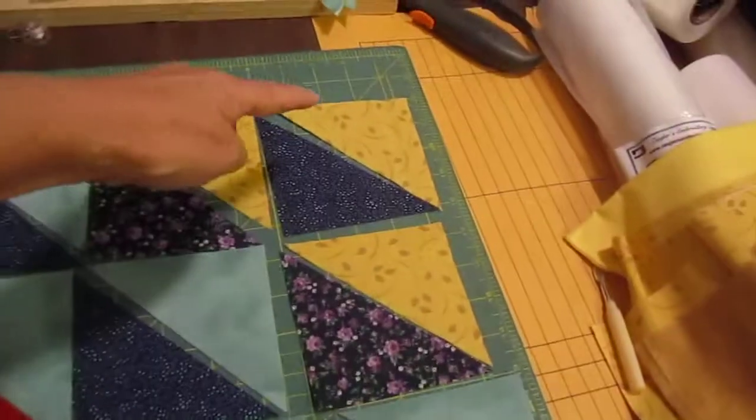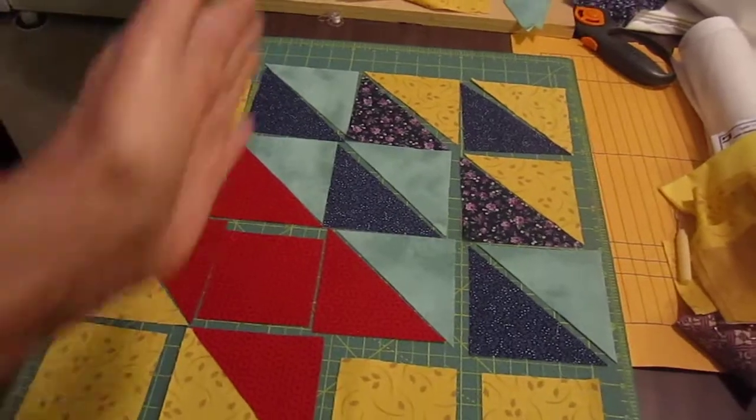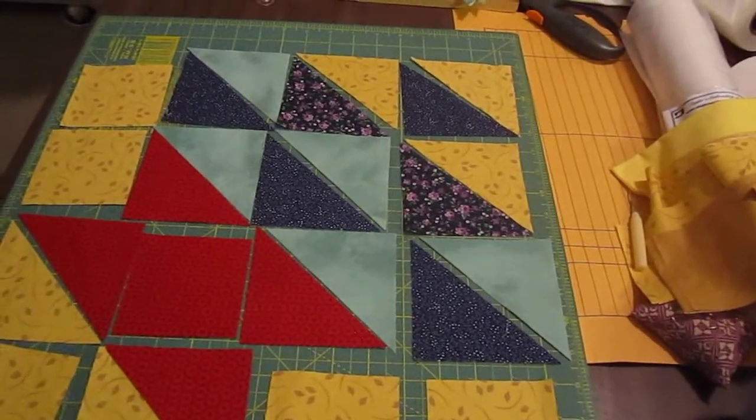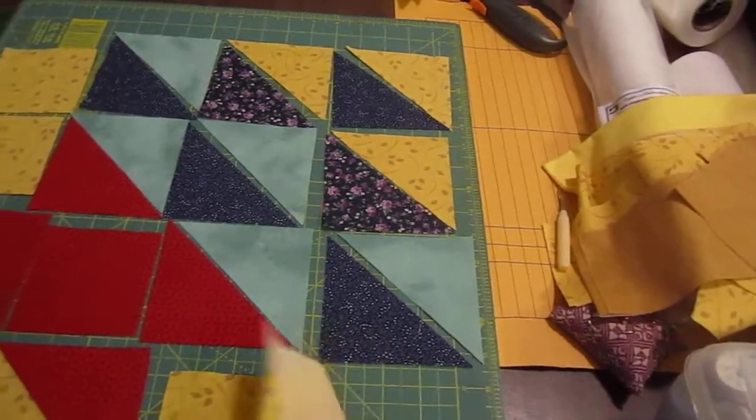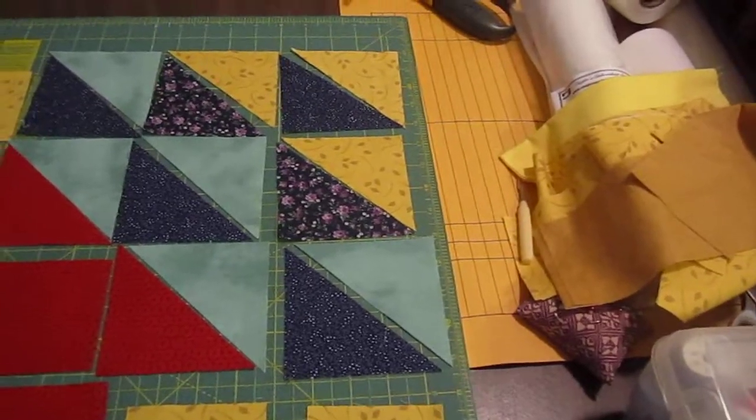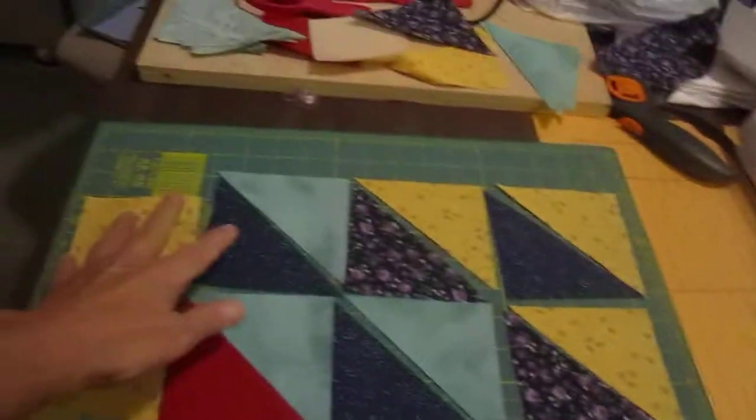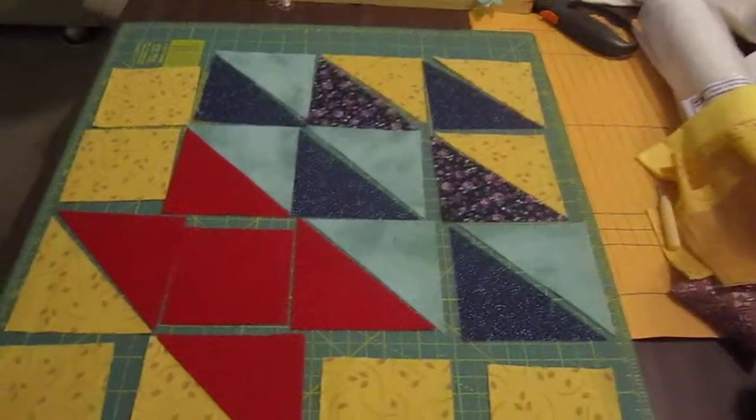And then the last row. You're going to end up with four rows sewn together. Then you're going to sew this row to this row and this row to this row. These will be sewn together here, these two will be sewn together over here, and you'll have two halves.